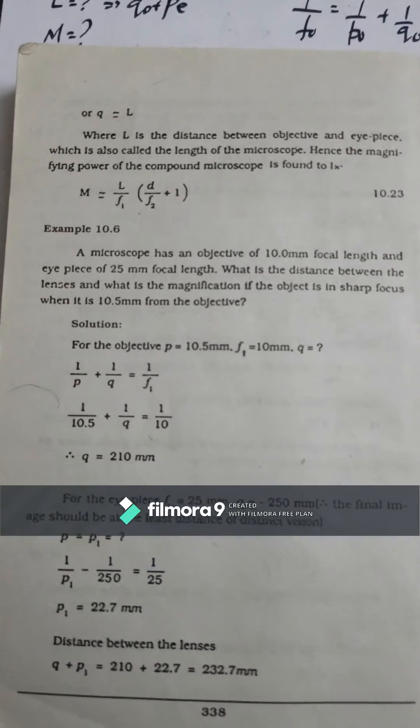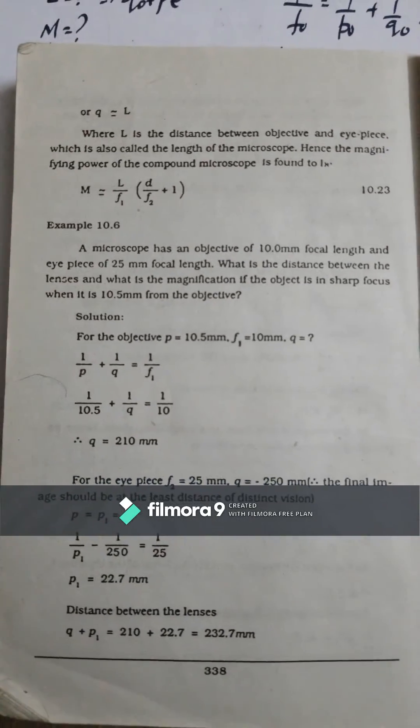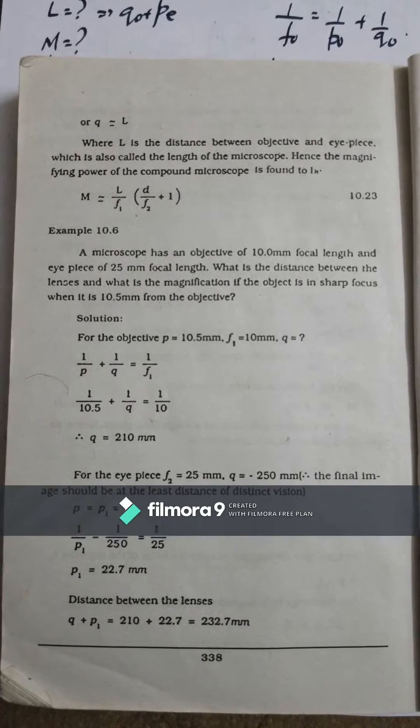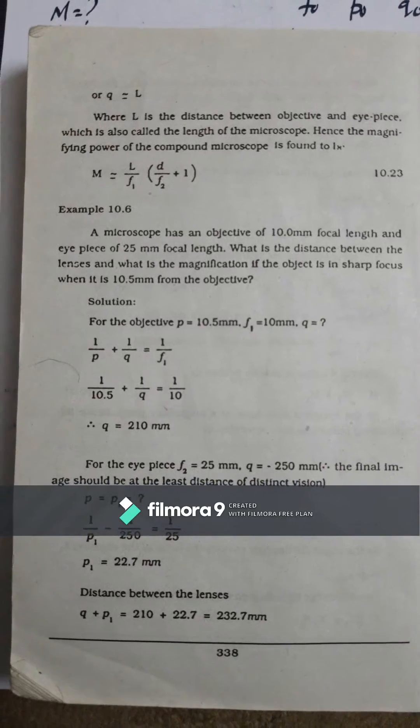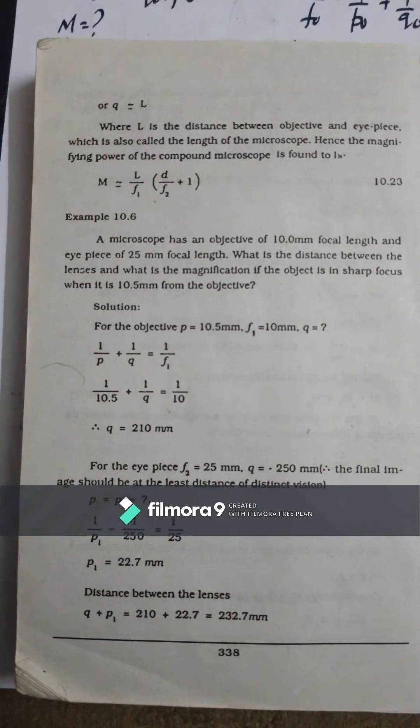This is the question that you can read. The microscope has an objective and an eyepiece. What is the distance between the lenses and what is the magnification when the object is placed at 10.5 mm from the objective? Let's see how we solve it.